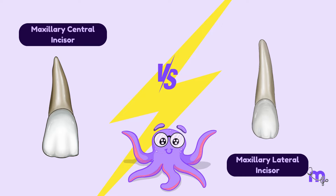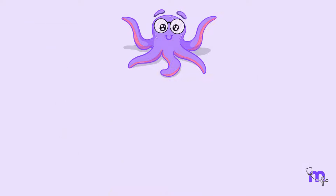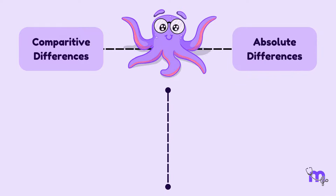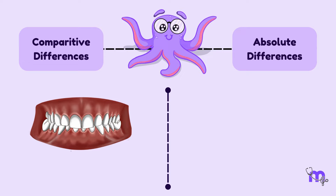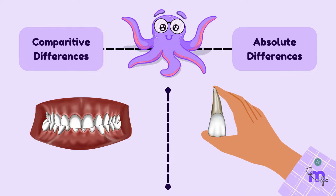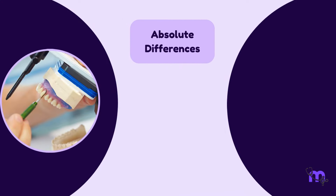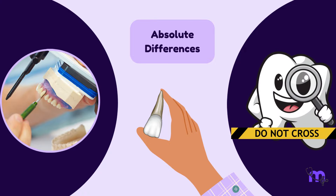If you are curious about the differences between these neighbouring teeth, you are in the right place. These can be studied as Comparative Differences and Absolute Differences. Comparative Differences can be noted when the two teeth of the same individual are viewed together, while Absolute Differences are standalone identifiers that are more significant when we have a single tooth in hand. This is particularly important during the placement of a single crown in a teeth setting or when examining a single tooth in forensic evaluation.